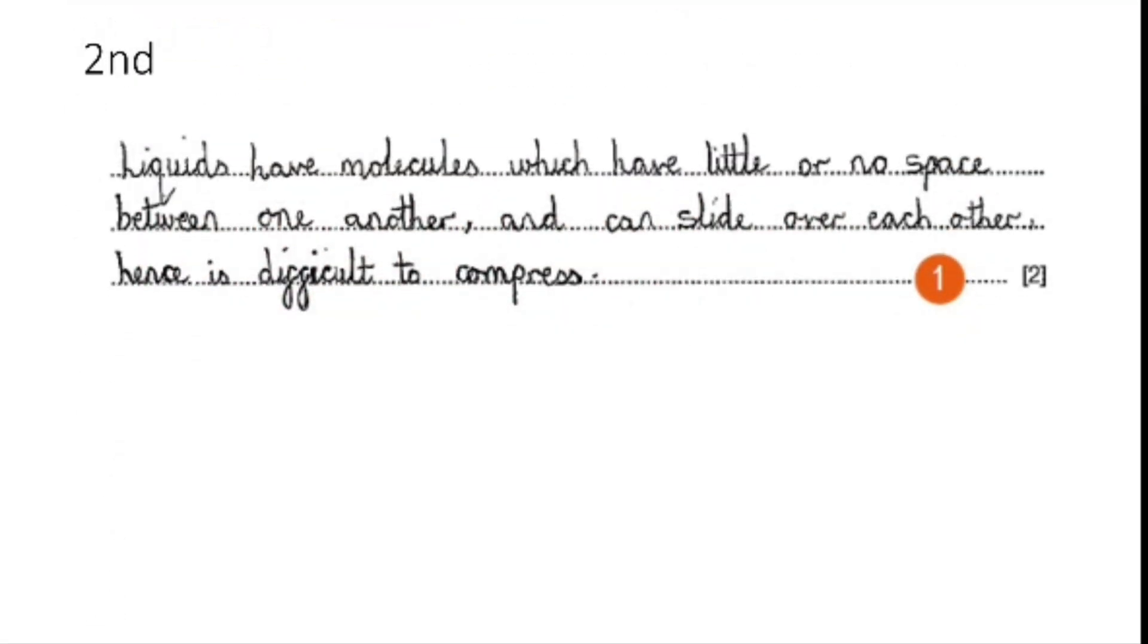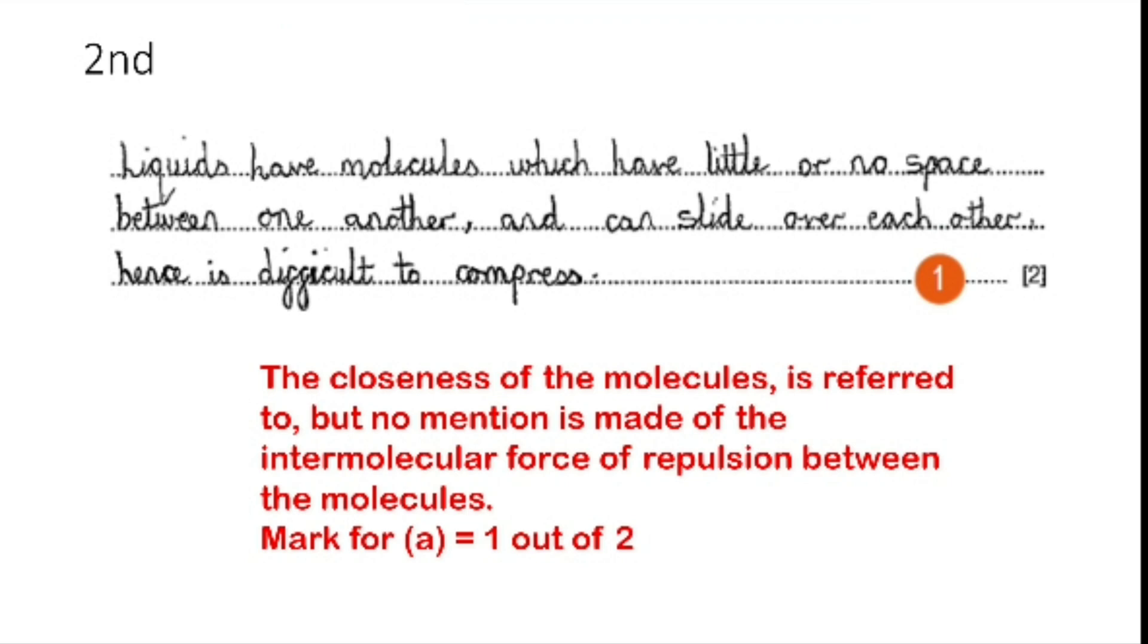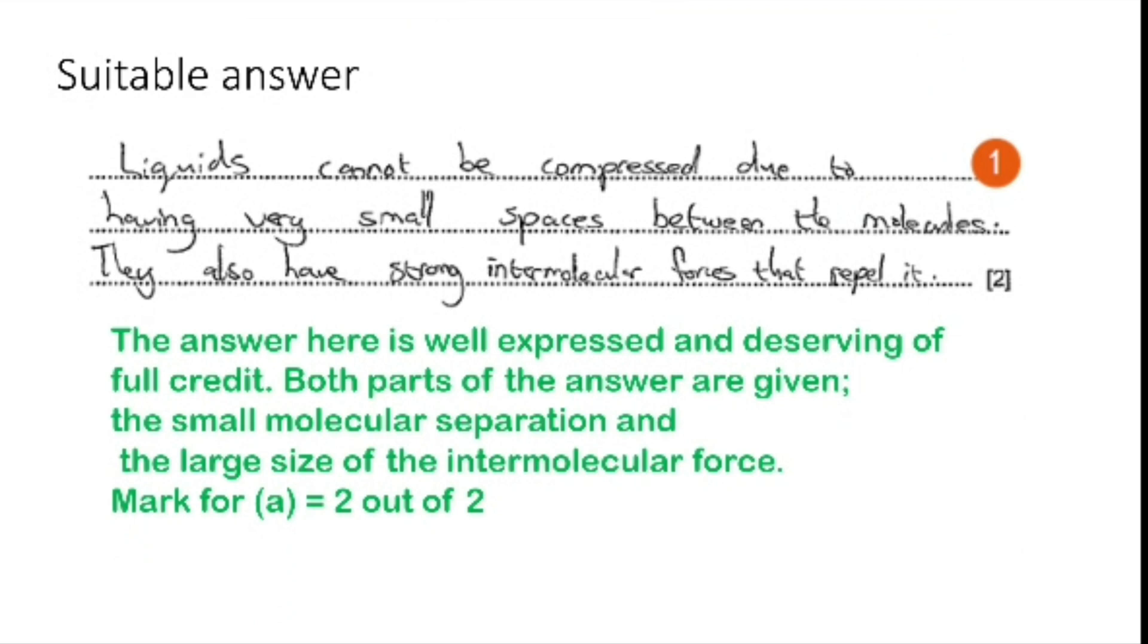The second answer is: liquids have molecules which have little or no space between one another and can slide over each other, hence difficult to compress. The marks awarded for this question is one out of two. Why? The closeness of the molecules is referred to, but no mention is made of the intermolecular force of repulsion. This is the suitable answer: liquid cannot be compressed due to having very small spaces between the molecules; they also have strong intermolecular forces that repel. The examiner's comment is the answer here is well expressed and deserving of full credit. Both parts of the answer are given: the smaller molecular separation and large size of intermolecular force. That's why two out of two marks is given for this answer.